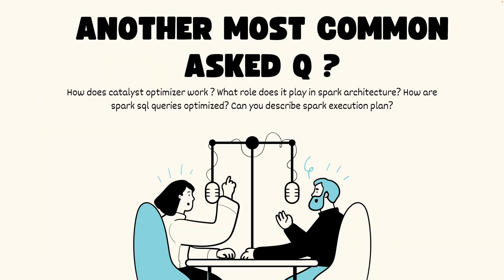Let's go through how an interviewer generally asks this question. There can be multiple ways, like: what is Catalyst Optimizer, how does it work, what role does it play in Spark architecture, how are Spark SQL queries optimized, how are their execution plans optimized, and how can you generate an execution plan of Spark?